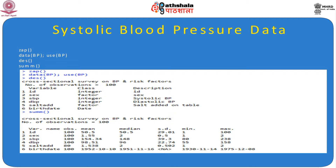All variables have 100 observations each. ID ranges from 1 to 100 — there is no meaningful interpretation for mean, median, or standard error for ID. Sex is also a factor variable coded as 1 and 2. Systolic blood pressure has a mean value of 154.34 with median 148, minimum 80 and maximum 238. Diastolic blood pressure has a mean of 98.51 with median 96. Salt added or not is given as 1 and 2.